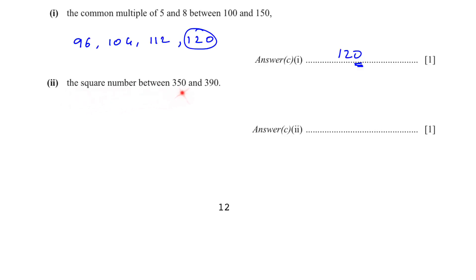For the next question, the square number between 350 and 390. Whenever you want to find the square number, you'll square root these numbers. Square root of 350 is 18.7 something, square root of 390 is 19.7 something. If you do 18 square, you will get 324. If you do 19 square, you will get 361. So 361 is the square number between 350 and 390.